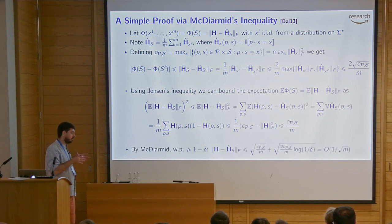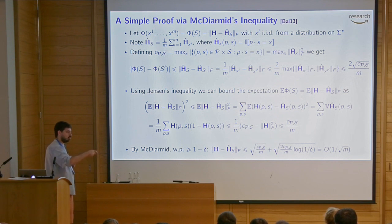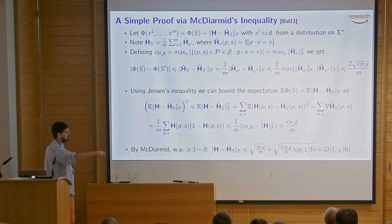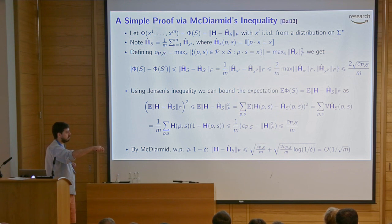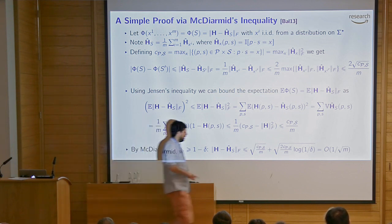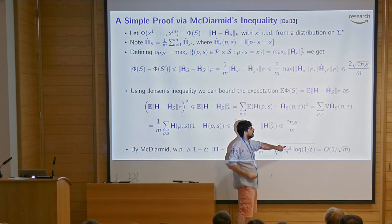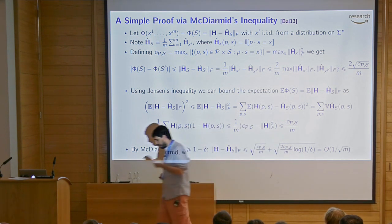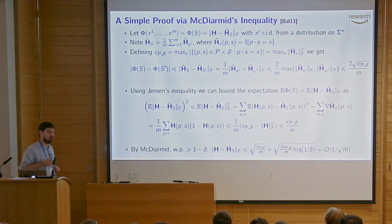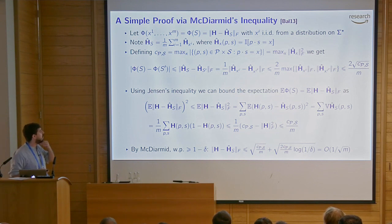Putting this all together in McDiarmid: with high probability, the function — which is the error we're controlling — is upper bounded by its expectation plus the McDiarmid correction term. The expectation is bounded by √(c_{P,S}/m), which goes down with m. The c in McDiarmid has m in the denominator, so after multiplying by √m from McDiarmid's formula, the m cancels and we get a rate of √(c_{P,S}/m). This is the only proof of Hankel matrix concentration that fits on one slide.